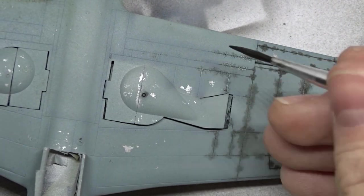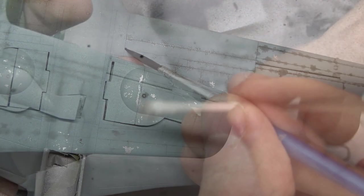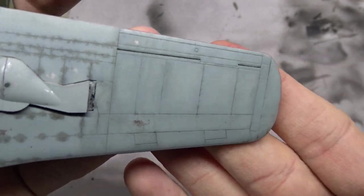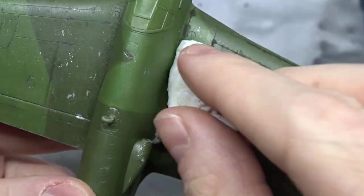Next up I used an enamel wash to accentuate the panel lines. I removed most of it again with cotton buds and a microfiber cloth.